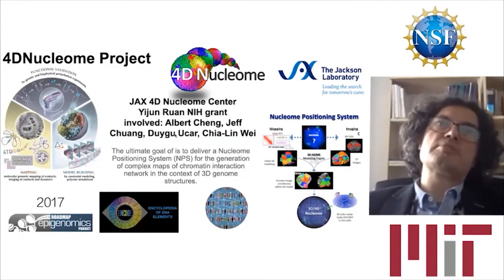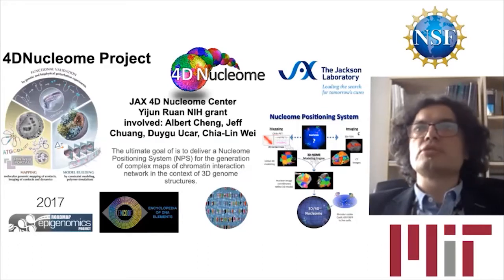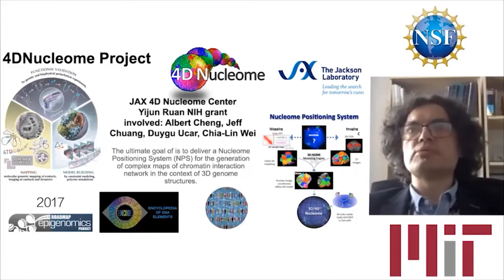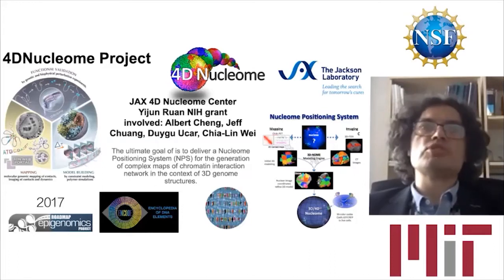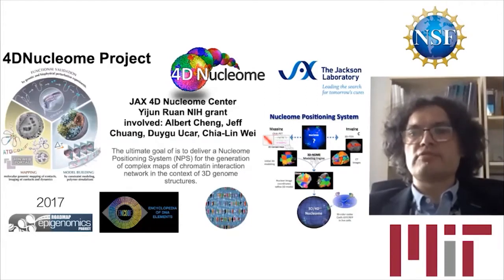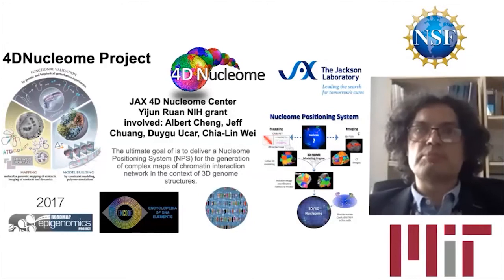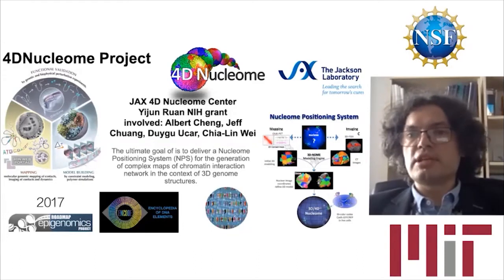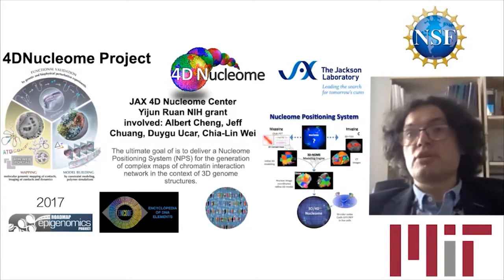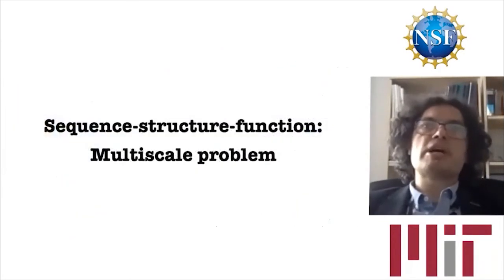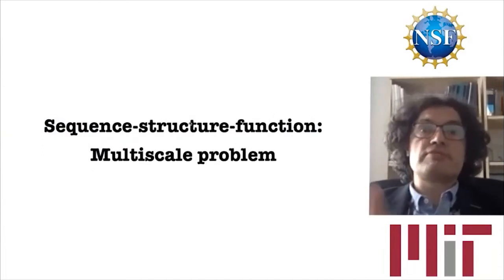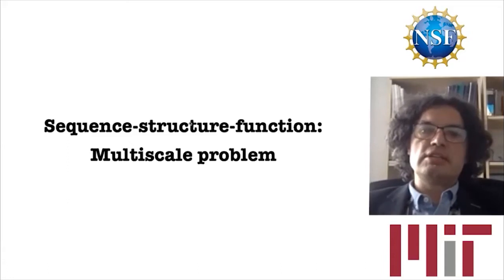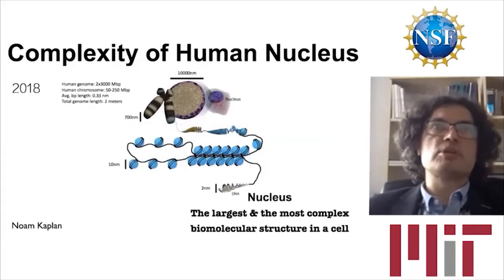Our participation in the 4D Nucleome was focused on a specific approach called ChIA-PET, and also imaging studies which allow us to construct 3D models of chromatin 10-nanometer fiber based on sequence information and reference structures. Coming back to the original question: we have sequence, we have structure, and we have function. The problem of the relation between sequence, structure, and function in the case of chromatin is definitely a multi-scale problem that reflects the complexity of the human genome.